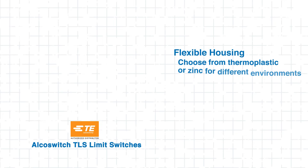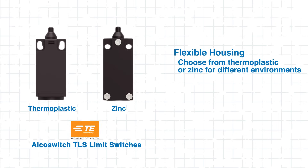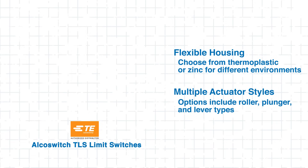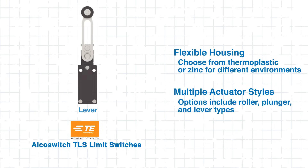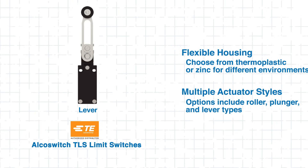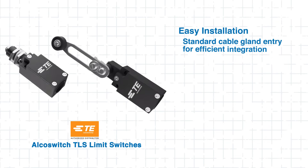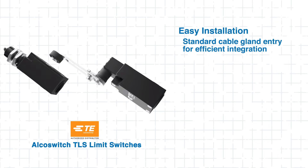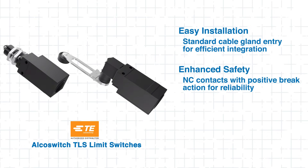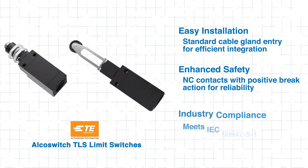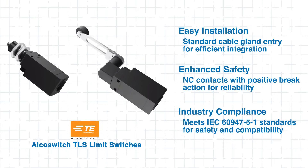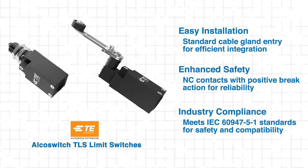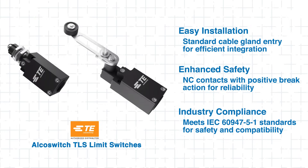Flexible housing options in thermoplastic or zinc allow customization for different conditions. Designed with versatility in mind, these switches offer multiple actuator styles — such as roller, plunger, and lever — for compatibility with various setups. They also feature a standard cable gland entry that simplifies installation. NC contacts with positive brake action provide enhanced safety, and they are compliant with IEC 60947-5-1 standards, meeting international requirements for electrical control.